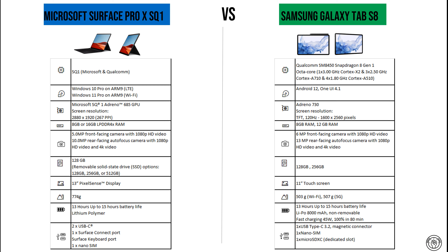As for the operating systems, the Microsoft Surface Pro X SQ1 comes with either Windows 10 on ARM or Windows 11 Pro on ARM. An important note: Wi-Fi models of the Surface Pro X come with Windows 11 Pro on ARM, while LTE models come with Windows 10 Pro on ARM. The Surface Pro X running Windows 10 Pro on ARM does not install 64-bit applications that have not been ported to ARM.